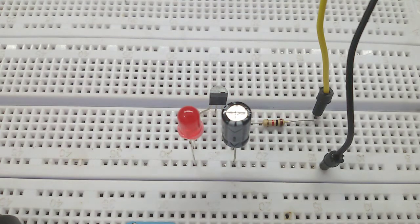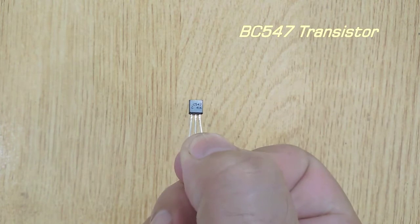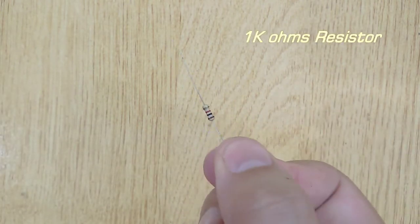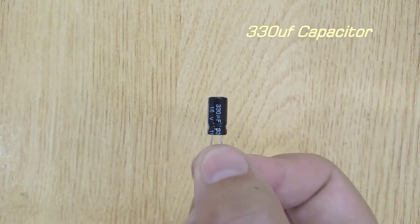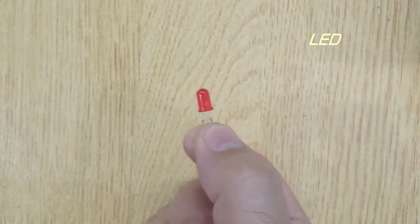For this LED flasher, you will need a VC547 transistor, 1kΩ resistor, 330 microfarad capacitor, and an LED.